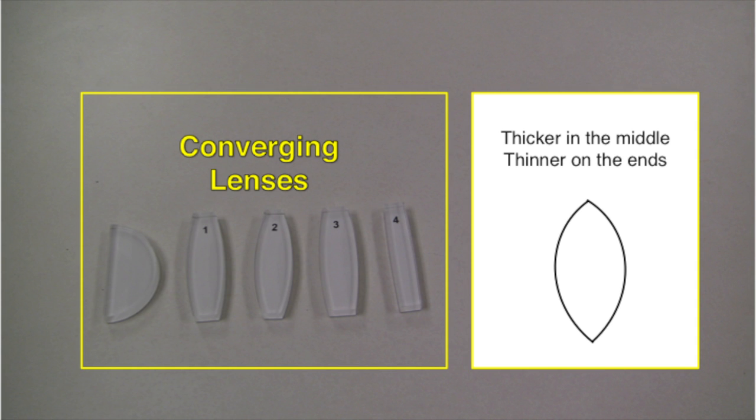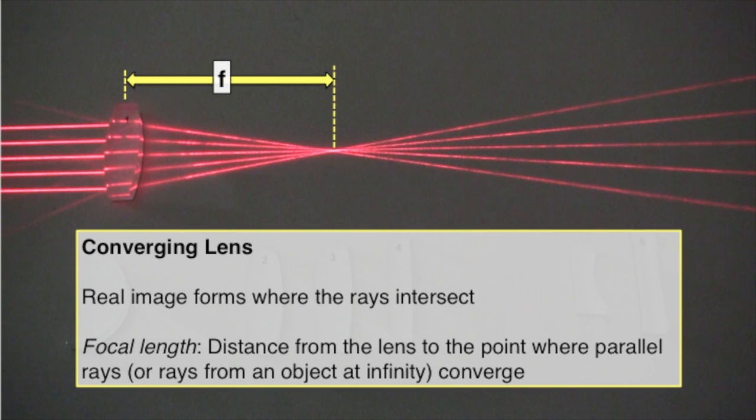Converging lenses are thicker in the middle and thinner on the ends. When parallel light rays are incident on a converging lens, these will meet at the focal point.